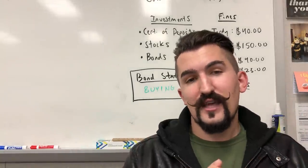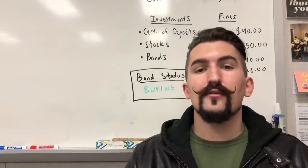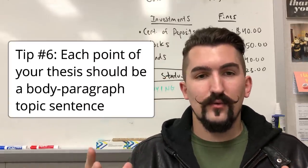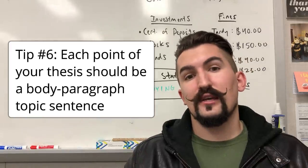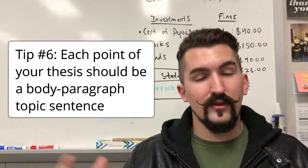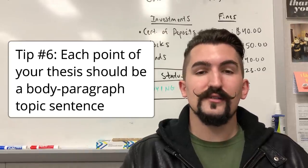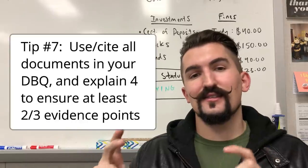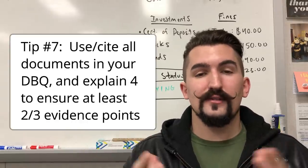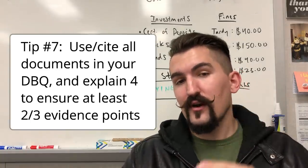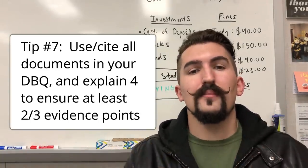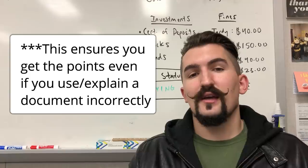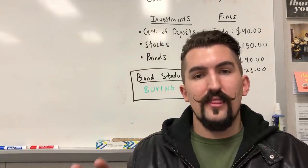Now after you've established that valid thesis statement, your following body paragraphs — which should ideally be three — should follow each point of that thesis statement. So my first paragraph should be all about the cause of the peasant rebellion, in this case Luther's ideas. The second paragraph should be all about the opposition by the nobility. And the third paragraph should be about the support of the Protestant peasants. Now to get those points, I need to cite at least six documents to get one of the evidence points.